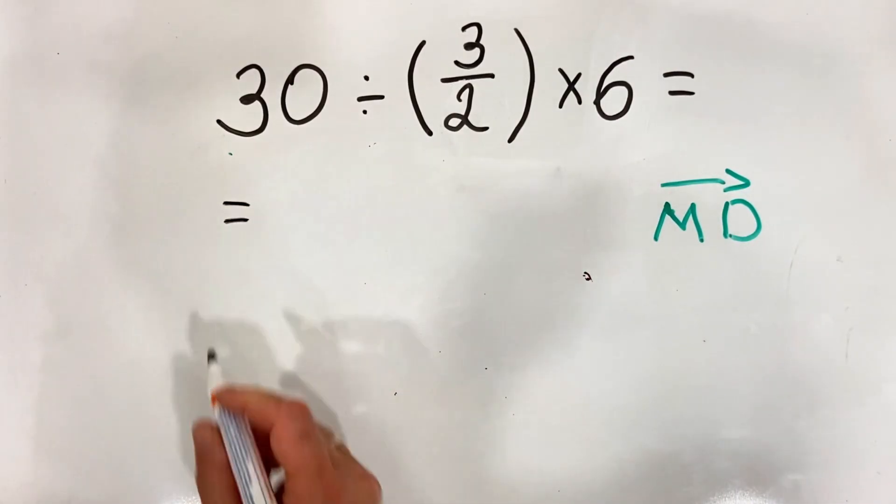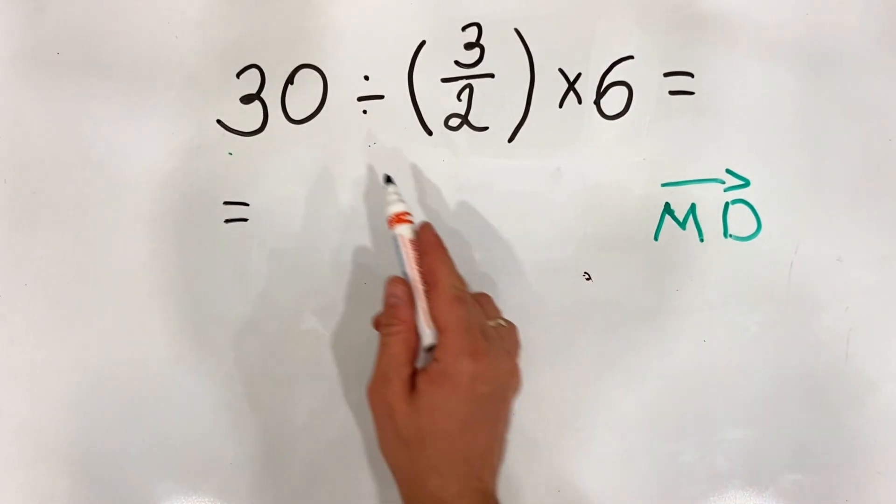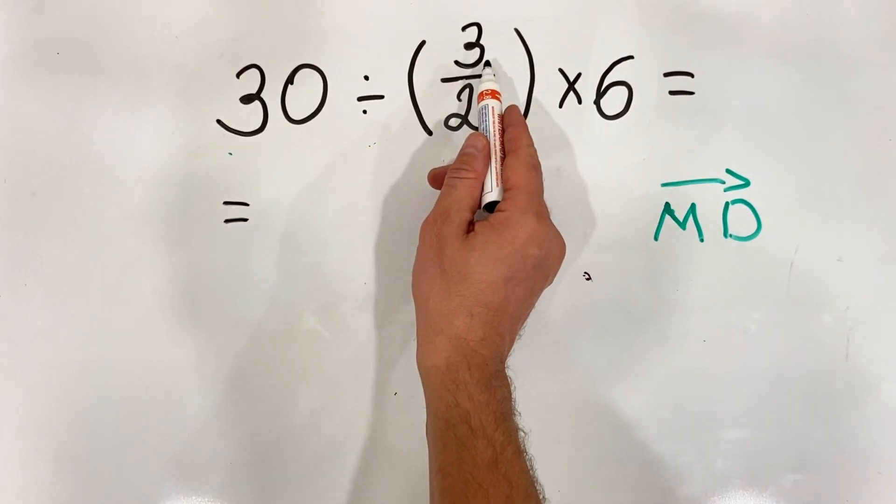What we have here, because it has equal priority: first we do 30 divided by 3 over 2.